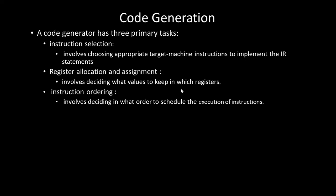Instruction selection involves converting the intermediate representation into target machine instructions, choosing instruction types such as CISC, RISC, or stack-based. The second task is register allocation and assignment, which involves deciding what values to keep in which registers and which values to put into memory.